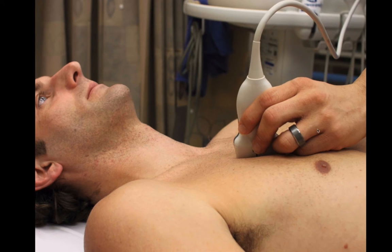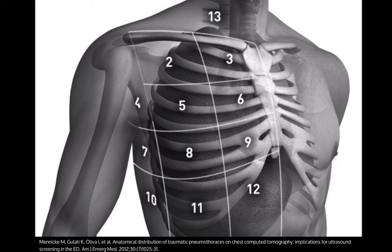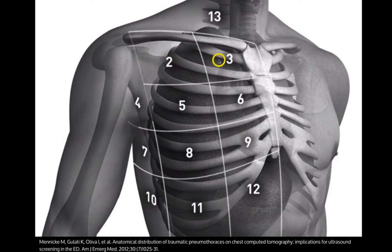When you place the probe on the patient, you want to place it in the most anterior part of the chest wall. I always learned you have to start at rib spaces two and three up here. But look at the shape of the chest — air outside the lung goes to the most anterior portion, and if the patient is lying flat, it's going to be closer to down here, not rib spaces two and three like many of us have been taught.